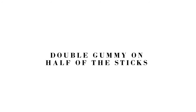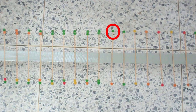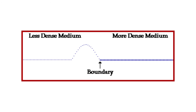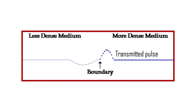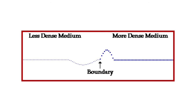For the third experiment, we doubled the candies on half of the wave machine. Instead of having two candies per stick, we increased the number to four candies per stick. By doubling the weight, we predicted that the incident wave, when striking the boundary at the halfway point, will be divided into a transmitted pulse that will continue down the wave machine, and a reflected pulse that will reflect back from the halfway point. The reflected pulse will be inverted and have smaller amplitude, while the speed and wavelength will be the same on the reflected pulse. Since the reflected wave and the incident wave are in the same medium, they will have the same speed and wavelength.